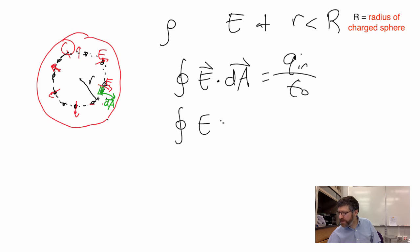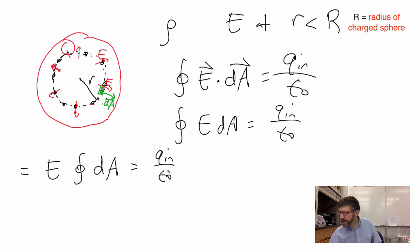This becomes ∮E dA = Q_in/ε₀. Because E has got to be the same everywhere by symmetry, I get to take it out of the integral. This equals E times ∫dA. That equals Q_in/ε₀. The integral of dA is the area of the Gaussian surface.